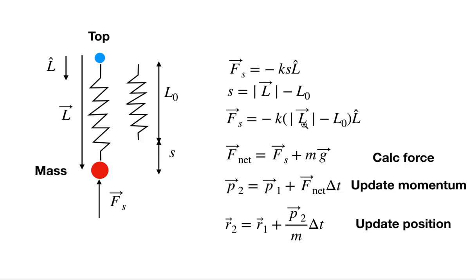Fair warning — half the time I mess this up and get it backwards, doing L0 minus L or putting the minus sign wrong so it blows up. But we'll fix it; mistakes are fine. Once we have the spring force, we calculate the net force — that's the spring force plus the gravitational force — then use that to update the momentum, use the momentum to update the position, and update time.